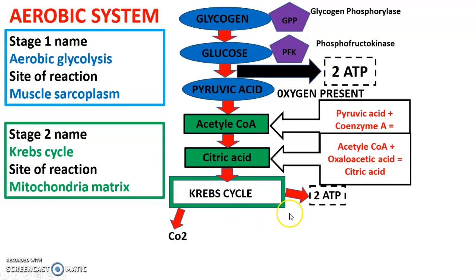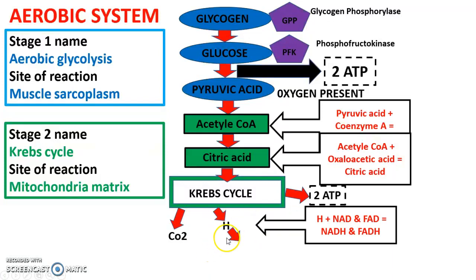Third, hydrogen is released from the Krebs cycle, and this is absolutely vital because hydrogen carries on down the aerobic system. Hydrogen binds to two electron carriers called NAD and FAD to form NADH and FADH. So we have 2 ATP giving us some energy, CO2 we breathe out, and hydrogen carrying on as NADH and FADH. Within hydrogen there is an electron and an ion — it is specifically the electron that is carried by NAD and FAD.